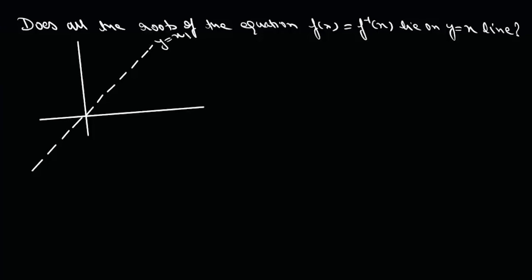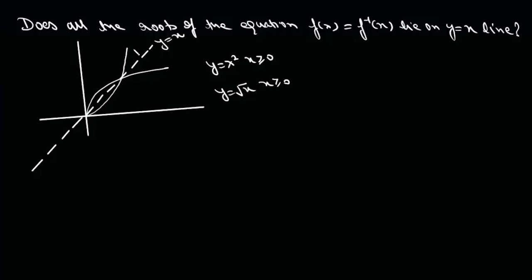If we consider two functions, say y equals x squared when x is greater than or equal to 0, and its inverse which is y equals root x when x is greater than or equal to 0, they are reflections of each other. These two curves intersect at two points, namely 0 and 1, and both points lie on the line y equals x.